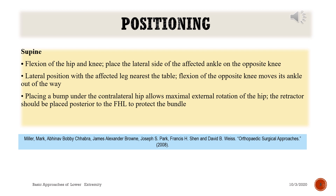Positioning: supine with flexion of the hip and knee, placing the lateral side of the affected ankle on the opposite knee. Alternatively, lateral position with the affected leg nearest the table; flexion of the opposite knee moves its ankle out of the way. Placing a bump under the contralateral hip allows maximal external rotation of the hip.